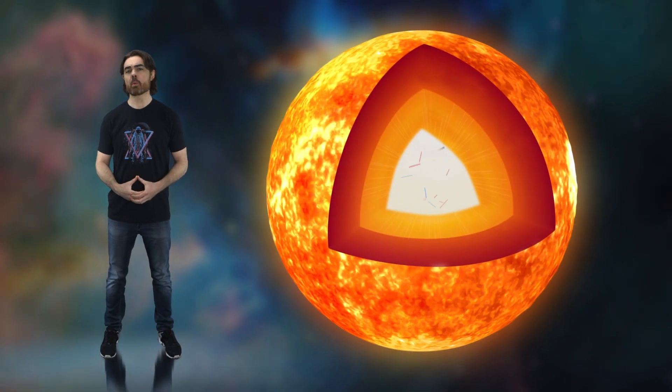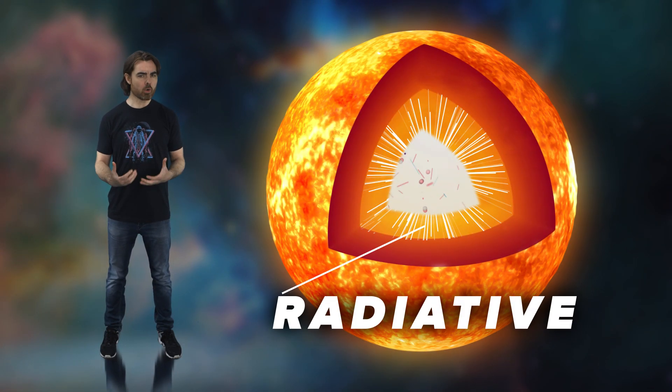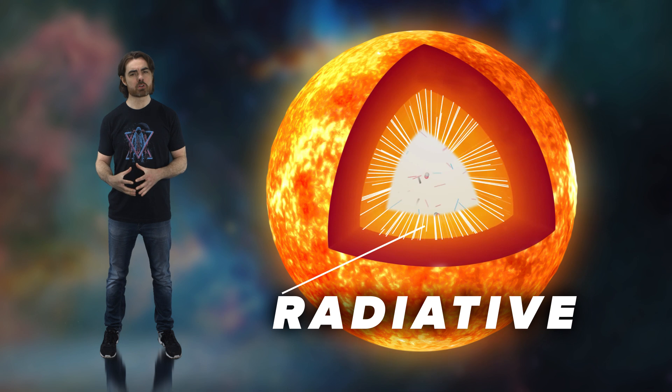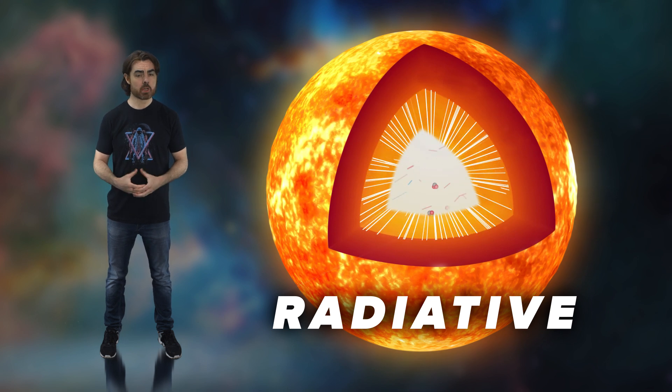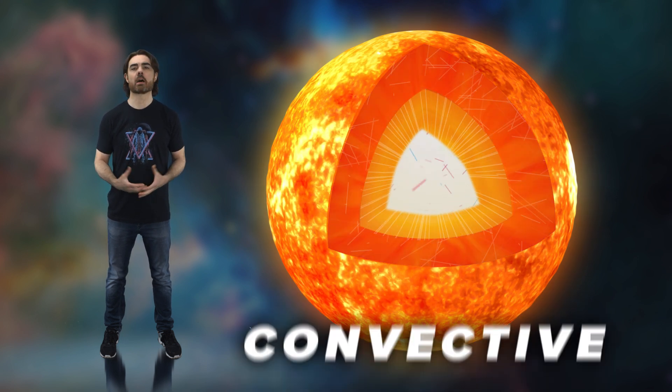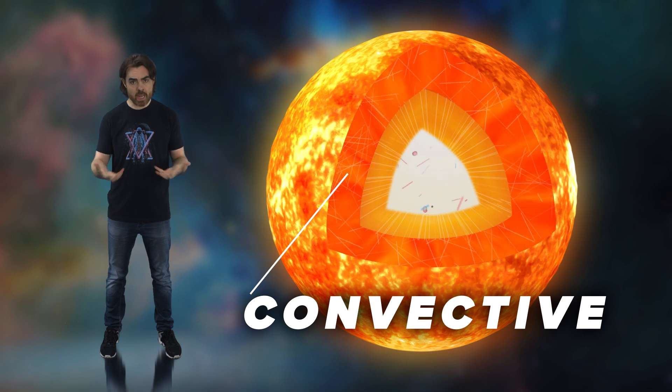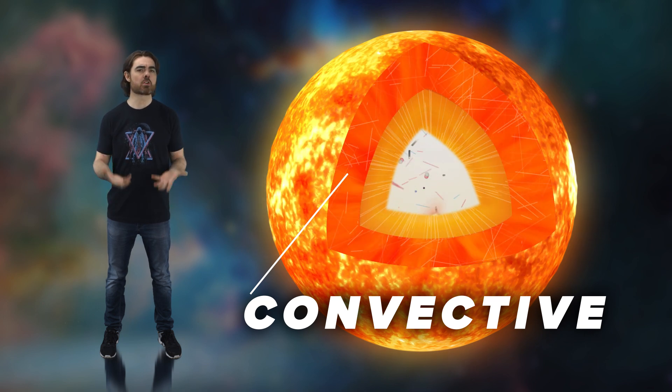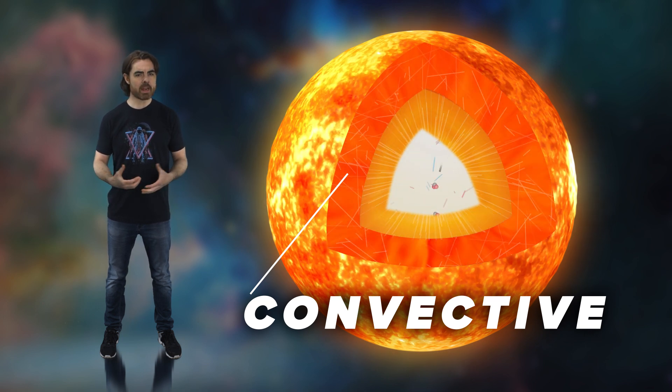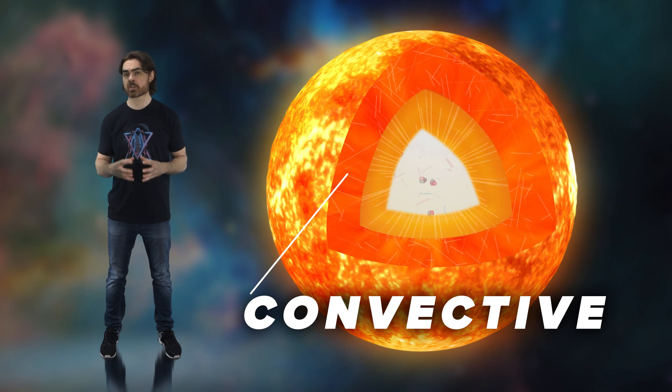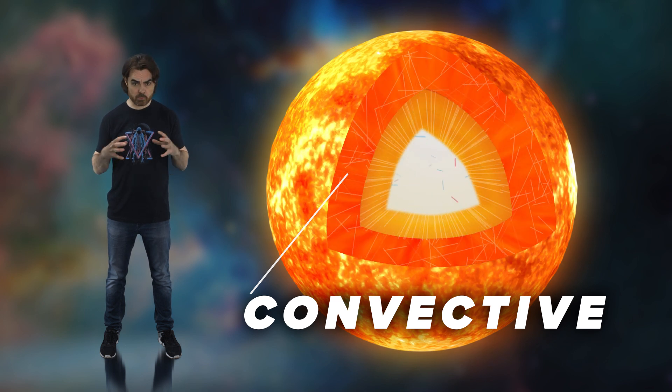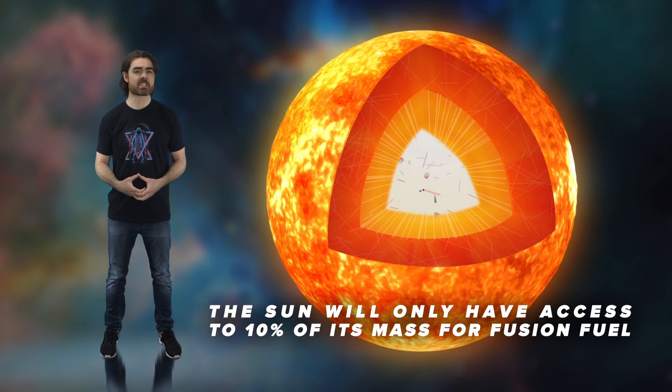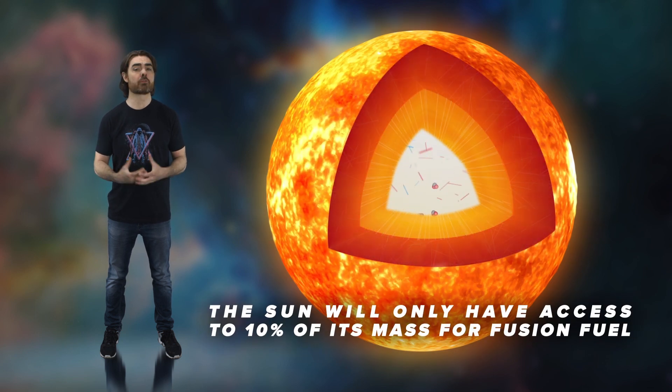Stars like our sun can only burn the hydrogen in their cores. The layer above the sun's core is what we call radiative. All of the energy travels in the form of photons, bouncing their way upwards. Closer to the surface, the sun becomes convective. Energy is transported in giant convection flows, rising to the surface and sinking again. That radiation zone isolates the sun's core, preventing new material from reaching those depths. As a result, the sun will only have access to 10% of its mass for fusion fuel.